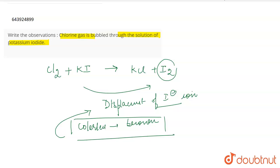So this is the observation when chlorine gas is bubbled through KI, it leads to the formation of this iodine, which gives a brownish color, which turns the colorless solution into a brown solution. So yeah, that's all for the question and that is what the observation is.